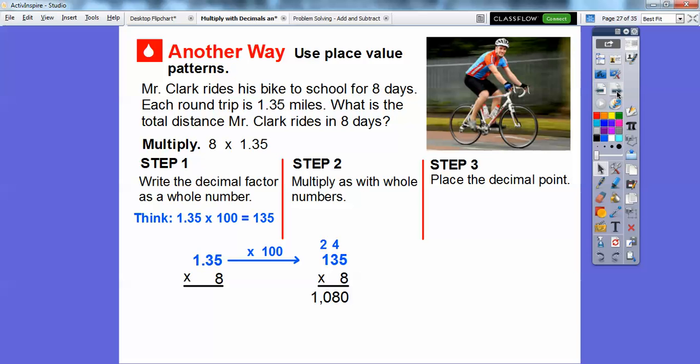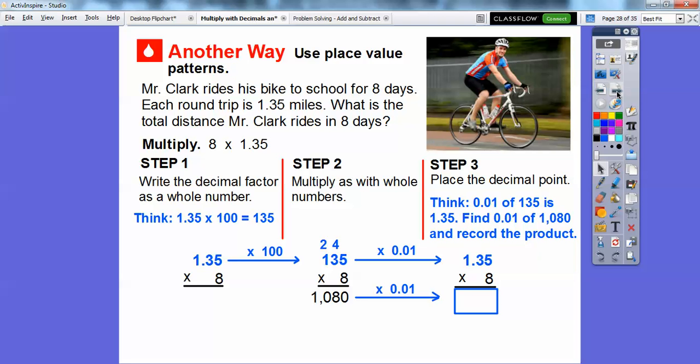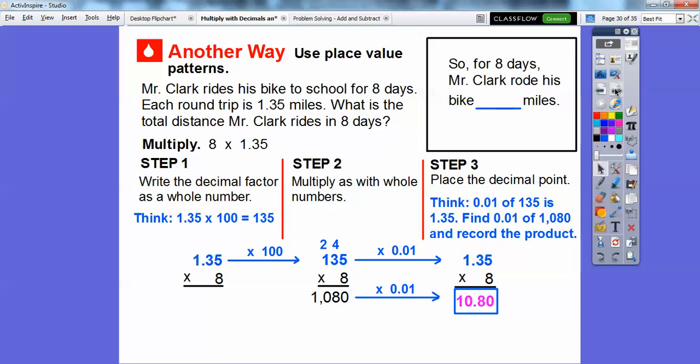So then we're going to place the decimal point back in. So just think, when we did 135, 0.01 of 135 is 1.35. So let's just find 0.01 of 1,080. So if we moved the decimal place from here back two places, then let's just take this answer and move it back two places. That's the same thing as multiplying by 0.01. So 1,080 is the same as 10.80. So for eight days, Mr. Clark rode his bike 10.8.